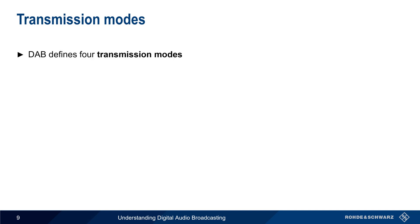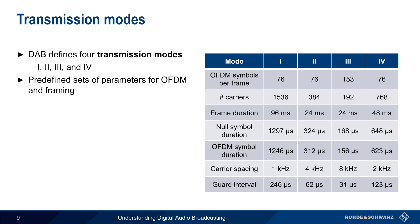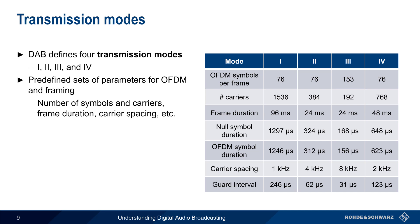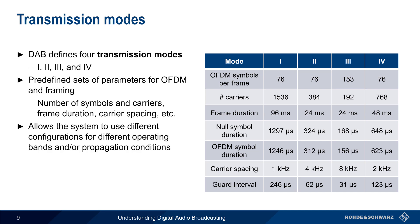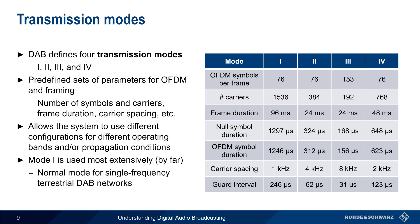DAB multiplexes can be transmitted using one of four transmission modes, which are usually designated by Roman numerals. These are predefined sets of OFDM and framing parameters, such as the number of symbols and subcarriers, carrier spacing, etc. The idea behind transmission modes was to allow the system to use different configurations when operating in different frequency bands and/or under different propagation conditions. However, the vast majority of DAB networks use Mode 1, which is the normal mode used for most single-frequency terrestrial networks.